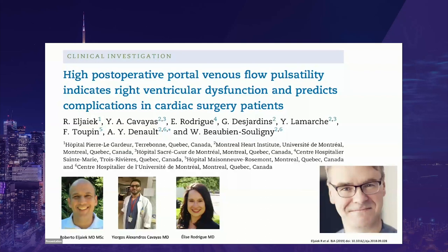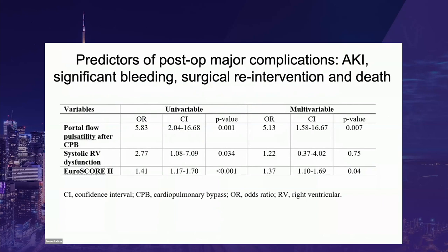The prognostic value of portal vein pulsatility has been studied by Dr. Beaubien-Sauigny and his team. In an article including 150 cardiac surgical patients published in the British Journal of Anaesthesia in 2019, they observed that abnormal portal or splenic vein pulsatility indicated RV dysfunction and predicted post-op complications — namely acute kidney injury, significant bleeding, surgical reintervention, and death. After multivariable analysis, portal flow pulsatility after cardiopulmonary bypass was the best predictor with an odds ratio of 5.13, outperforming systolic RV dysfunction.